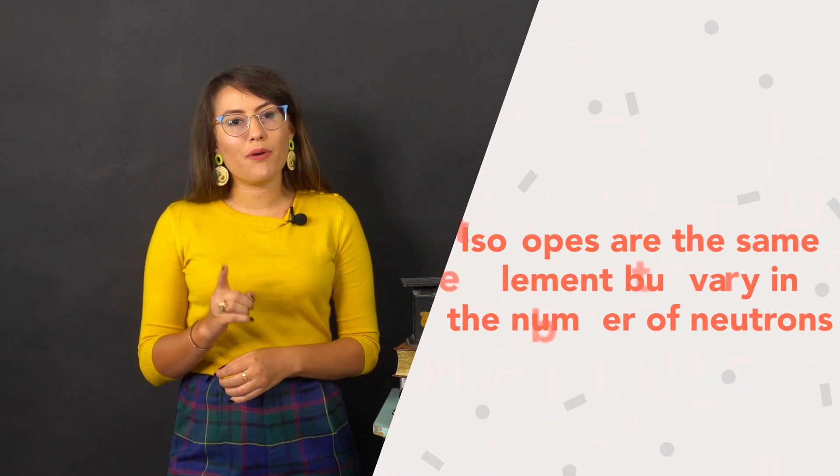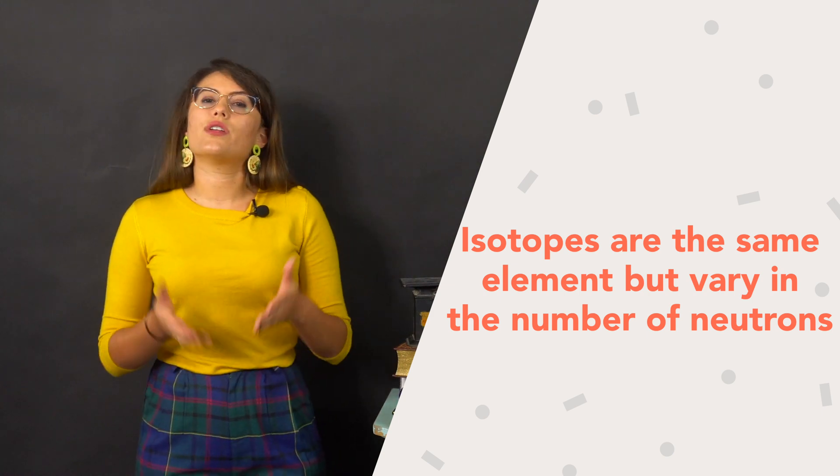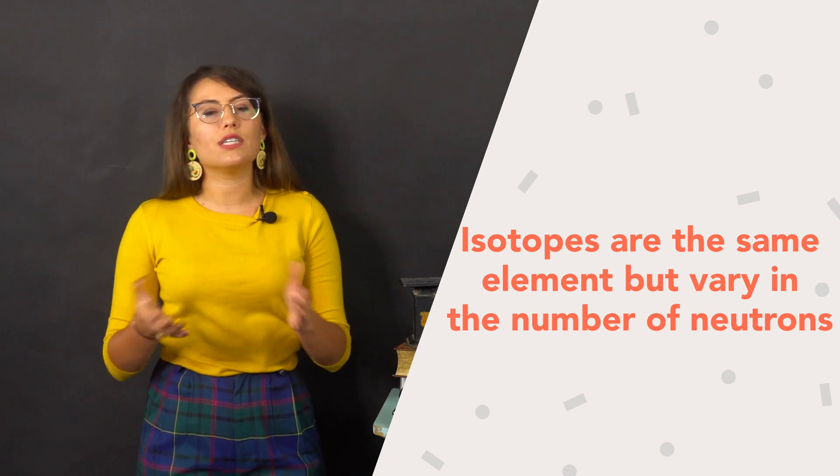It is important to point out that different atoms of the same element may have different mass numbers. These are known as isotopes, and will have the same number of protons, but have different number of neutrons.